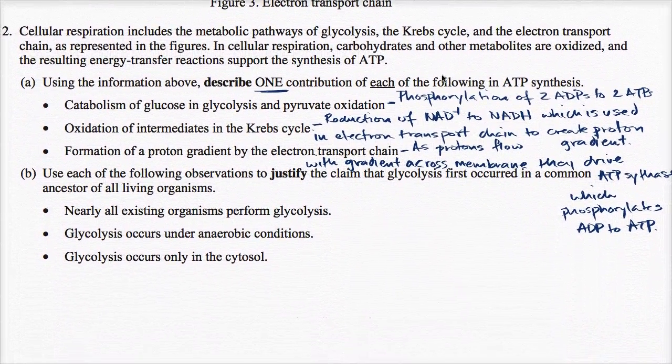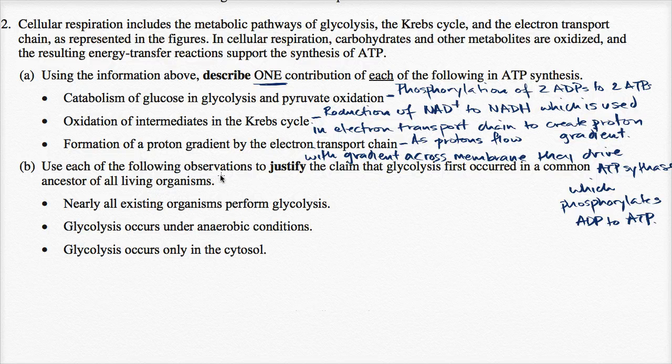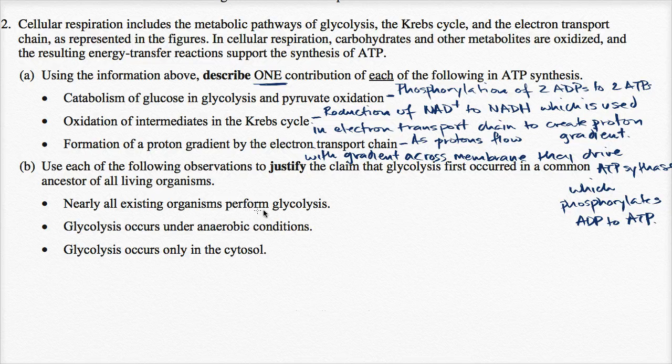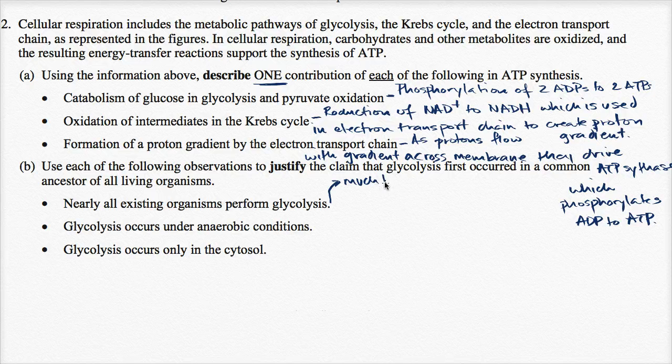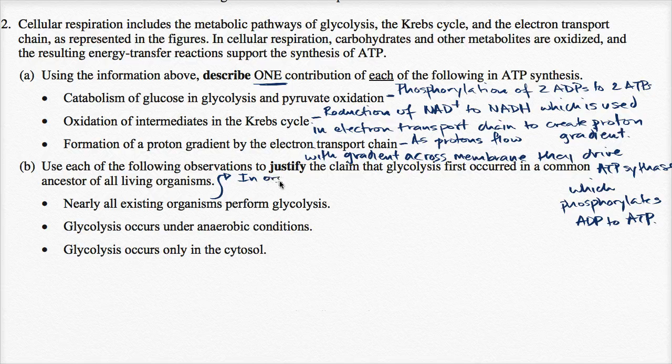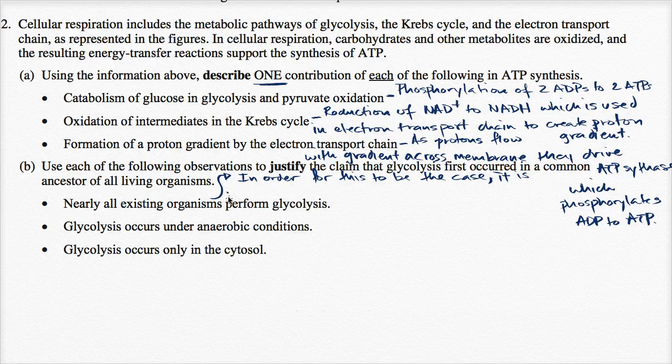All right, now let's see if we can tackle part B. Use each of the following observations to justify the claim that glycolysis first occurred in a common ancestor of all living organisms. So nearly all existing organisms perform glycolysis. So it's much more likely, in order for this to be the case, it is much more likely...